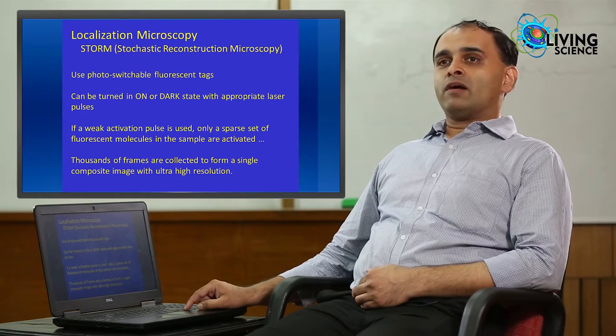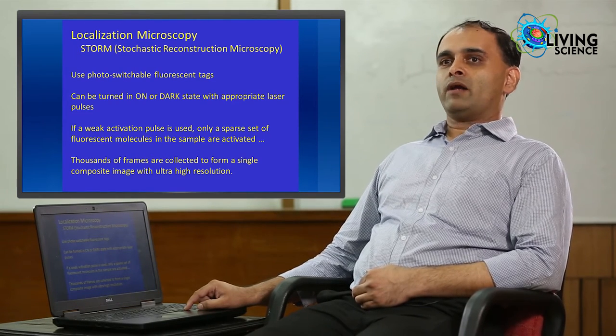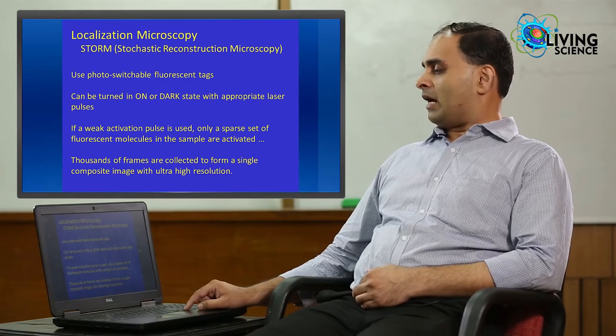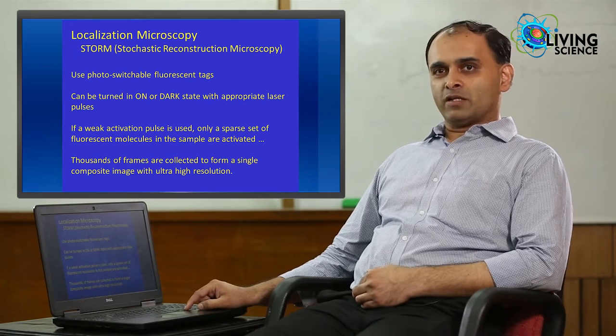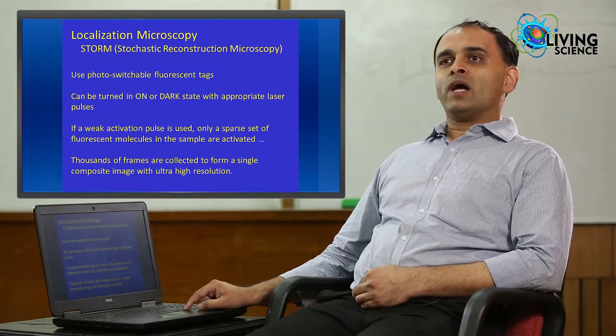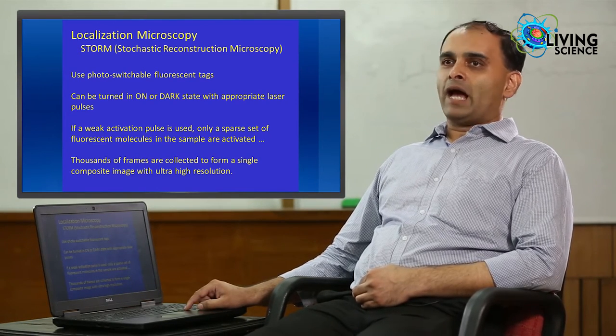Typically, you need to record thousands of such frames where a sparse set of molecules are activated. In each frame, you have to calculate the centroid positions for the blurred spot and then you can make one composite image which has extremely high resolution.